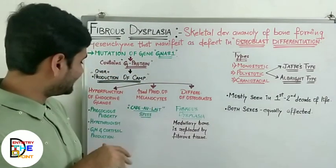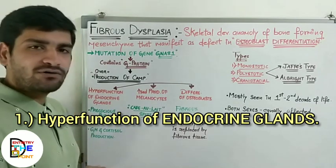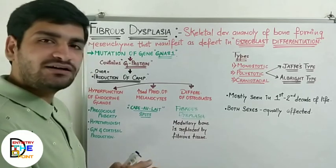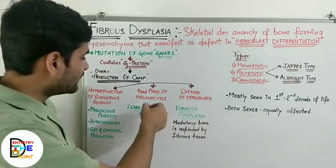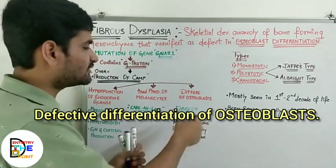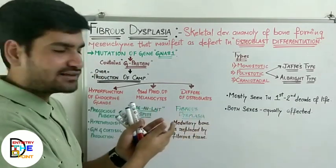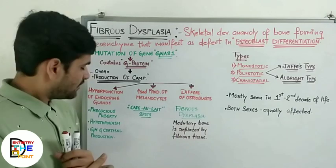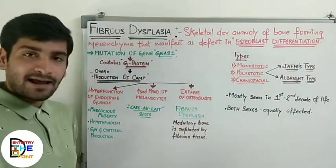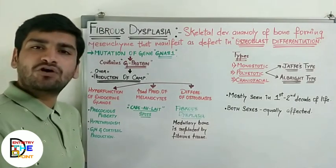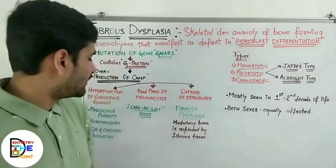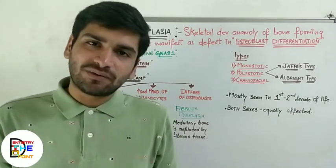Due to this overproduction of cyclic AMP, three things are going to occur. First is hyperfunction of endocrine glands, which leads to precocious puberty, hyperthyroidism, and overproduction of growth hormone and cortisol. These are the four consequences occurring due to hyperfunction of endocrine glands.